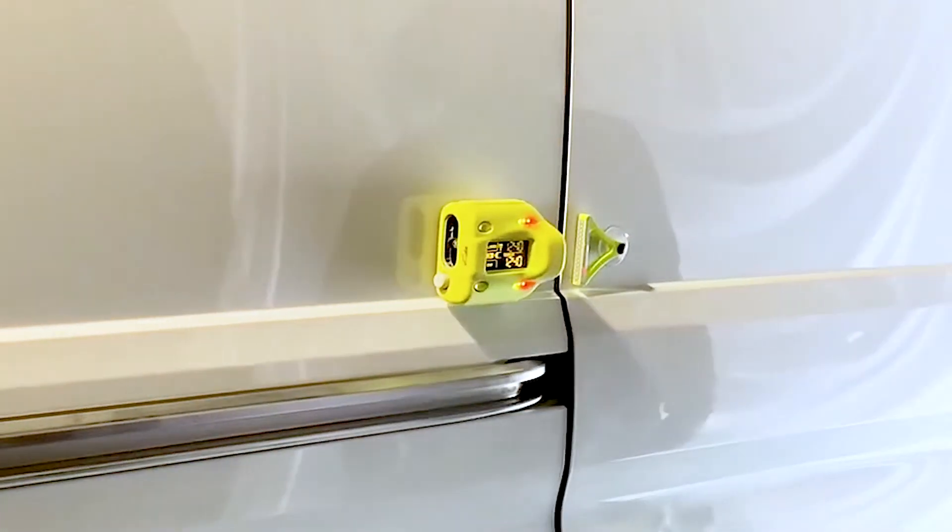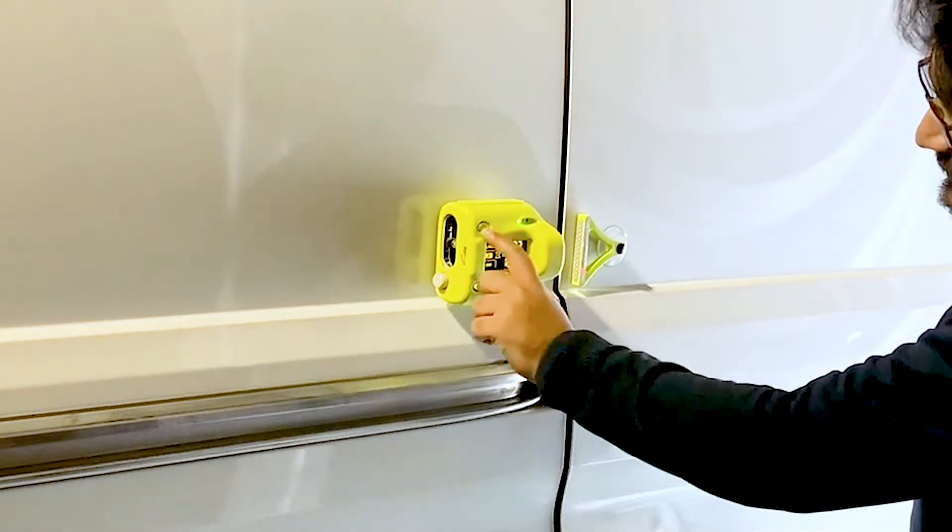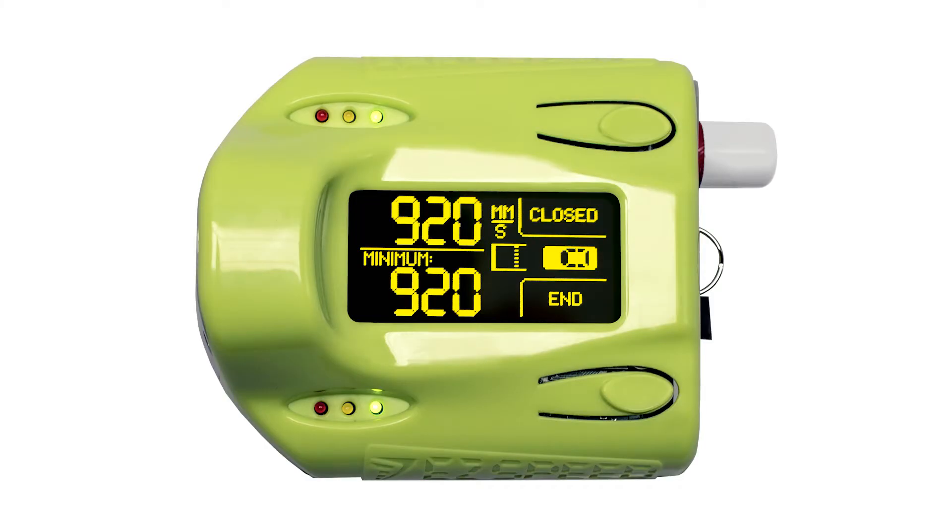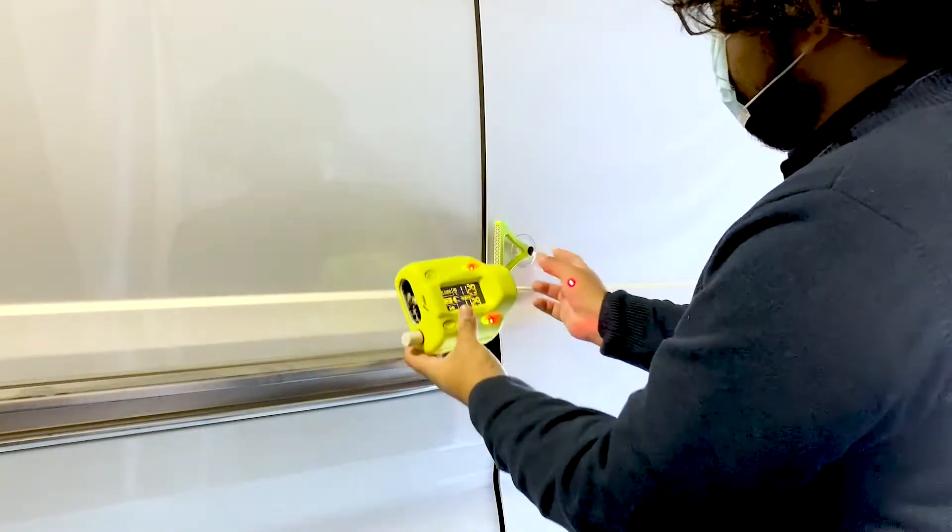Once the fully closed state has been reached, pressing the closed button will enter that speed as the lowest closed speed. When satisfied with the measurement, the end button is pressed to return the device to the main screen ready for another test.